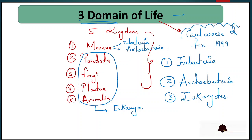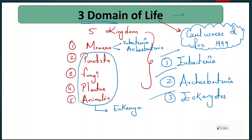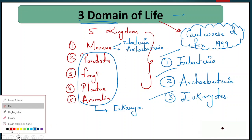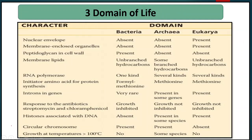Now let's compare the three domains — Eubacteria, Archaebacteria, and Eukaryotes — based on their characters. We have to understand and remember this comparison chart. The columns are: Eubacteria (true bacteria), Archaebacteria, and Eukarya.